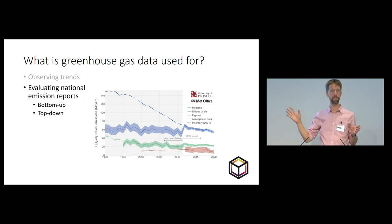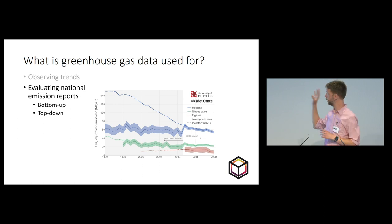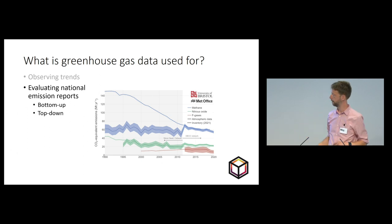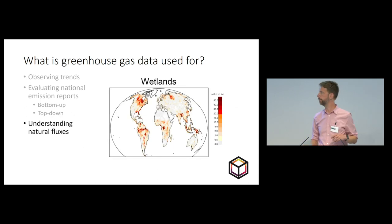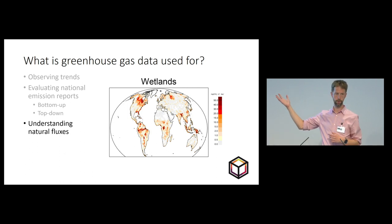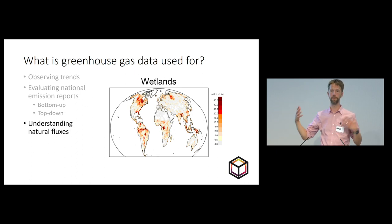The UK is pretty pioneering in this respect. We have a lot of information that we combine from the top-down atmospheric perspective and the bottom-up to really try and understand what we're emitting as well as we can. We also use a variety of different models and data to try and understand natural fluxes and how they're changing — for example, a process model predicting methane emissions from wetlands, a system that's really sensitive to climate.